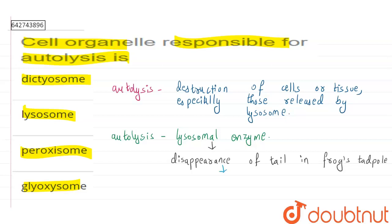In humans, autolysis happens in the gums. It helps in the softening of gums, and because of this softening, the eruption of teeth becomes easier. So autolysis helps in the eruption of teeth.